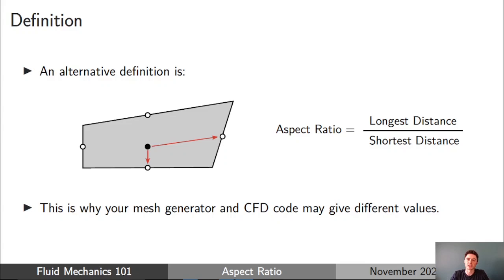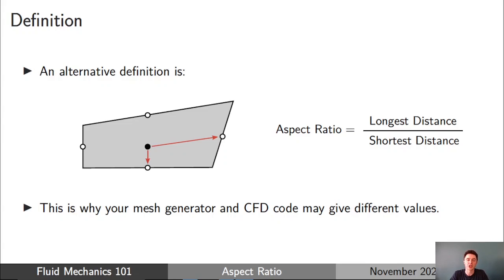Even from this brief discussion, you can probably see there are many different possible definitions and interpretations of aspect ratio for 3D polygons, and this is often why your mesh generator and your CFD code — and if you switch to a different CFD code — will often give different values for what the largest aspect ratio is. For this talk, I don't want to focus on the definition of aspect ratio; I want to focus on the effect of aspect ratio on the CFD code, so generally just look at whether the aspect ratio is large or small.